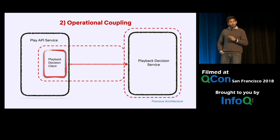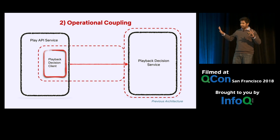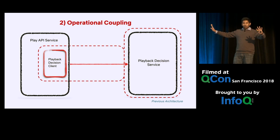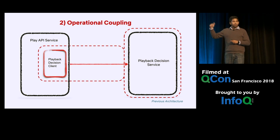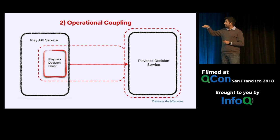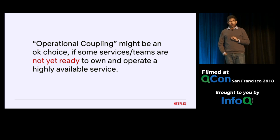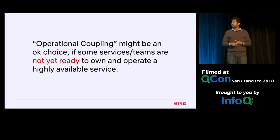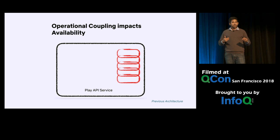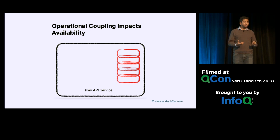What we have here is operational coupling. We have two domain contexts, each with its own responsibilities — the playback decision service does playback decisions, the API service does orchestration. However, via the playback decisions client, the operational context of the playback decision service is leaking into the play API service. Operational coupling worked well for several years — many teams may not be ready to fully own and operate a highly available microservice. However, as years progressed, the API service, being a nexus service incorporating several client libraries, became an untenable situation to operate.